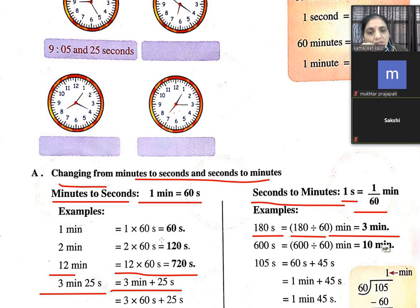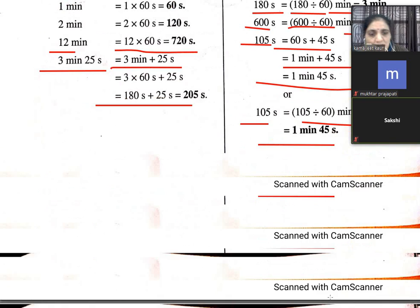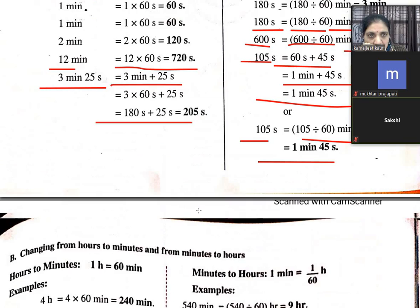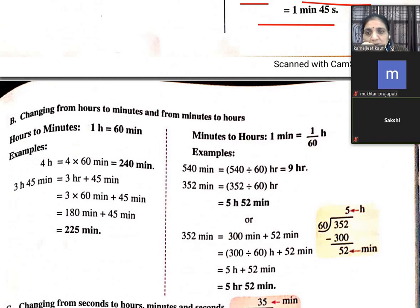If something is given in seconds and you need to convert to minutes — for example 600 seconds ÷ 60 = 10 minutes. 105 seconds = 60 + 45, so 1 minute and 45 seconds. If the digit is below 120, you make one minute of 60 and keep the remainder as seconds. It's simple.